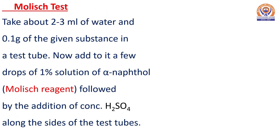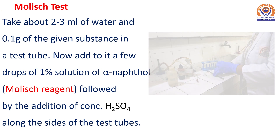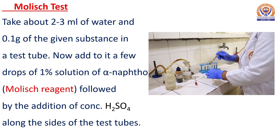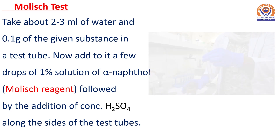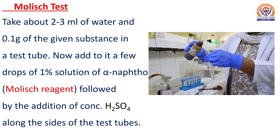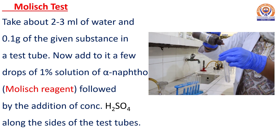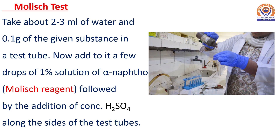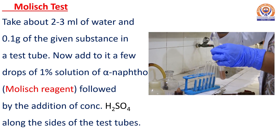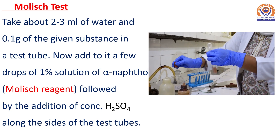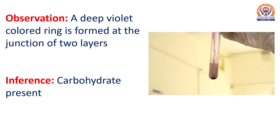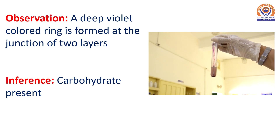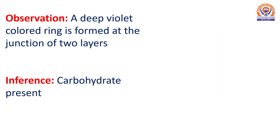The next test is the Molisch test. For this, we take 2 to 3 ml of water and 0.1 gram of the given substance in a test tube. We add a few drops of 1% solution of alpha-naphthol — that is the Molisch reagent — followed by the addition of concentrated H2SO4 along the sides of the test tube. We observe that a deep violet colored ring is formed at the junction of the two layers, indicating that a carbohydrate is present.